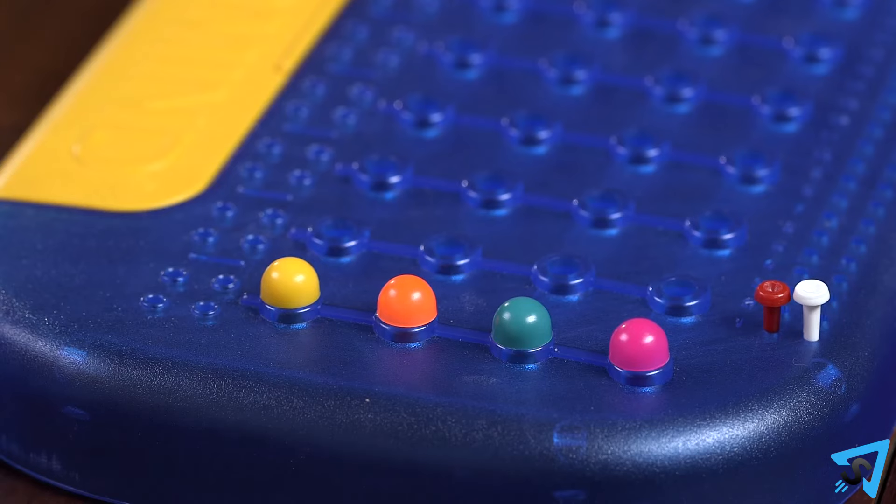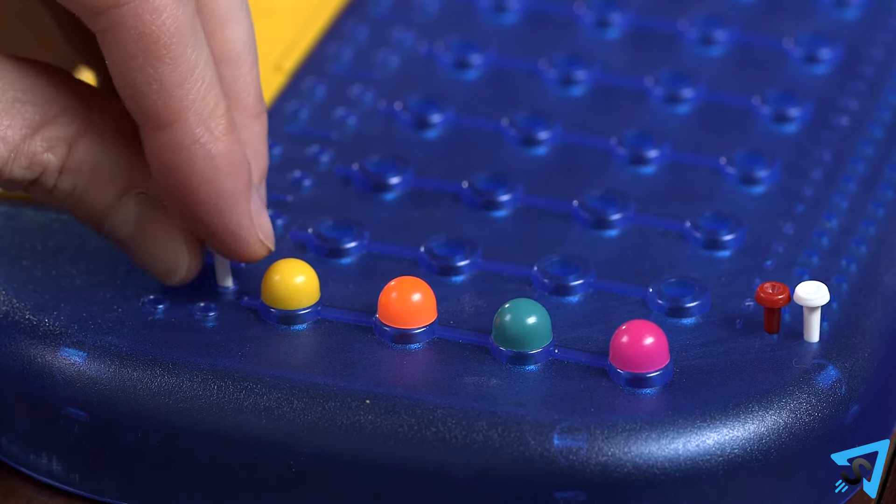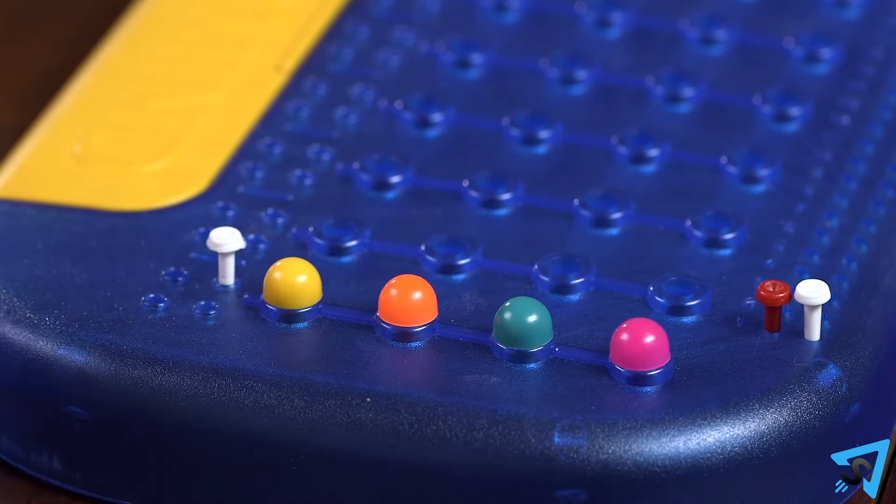Once the code breaker has finished the first row, the code maker must provide feedback to the code breaker as to how close his code is to the hidden one. Using the tiny red and white pegs, the code maker indicates what information is correct.